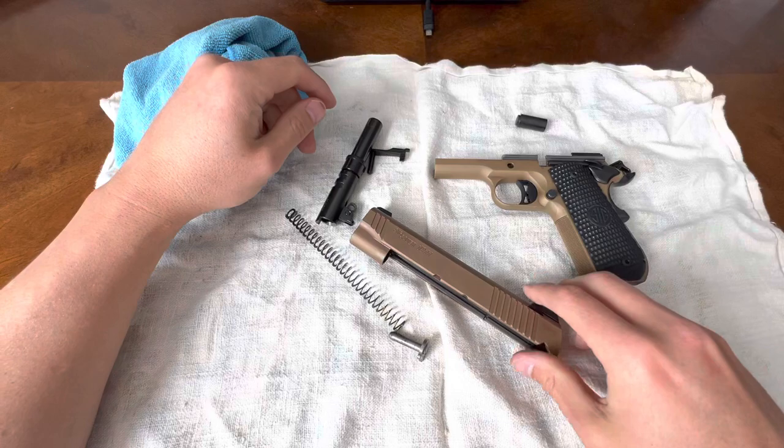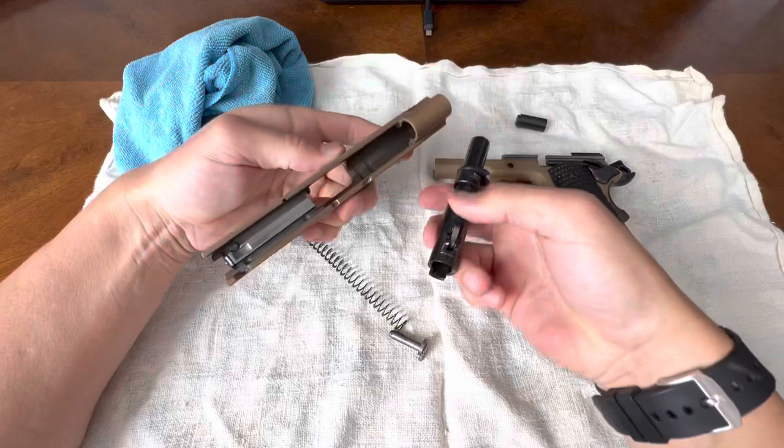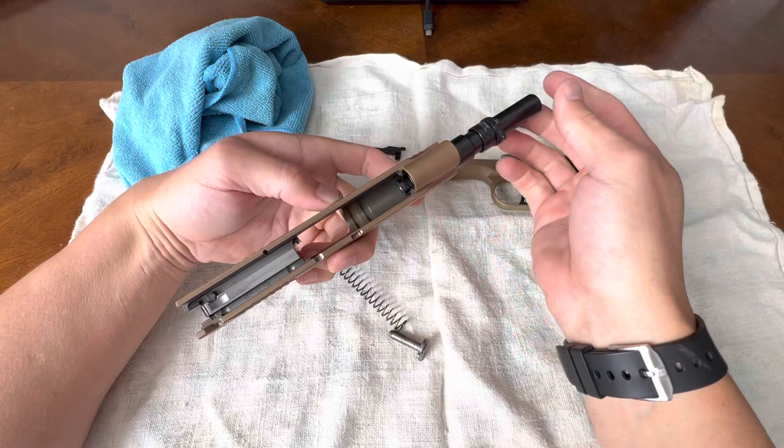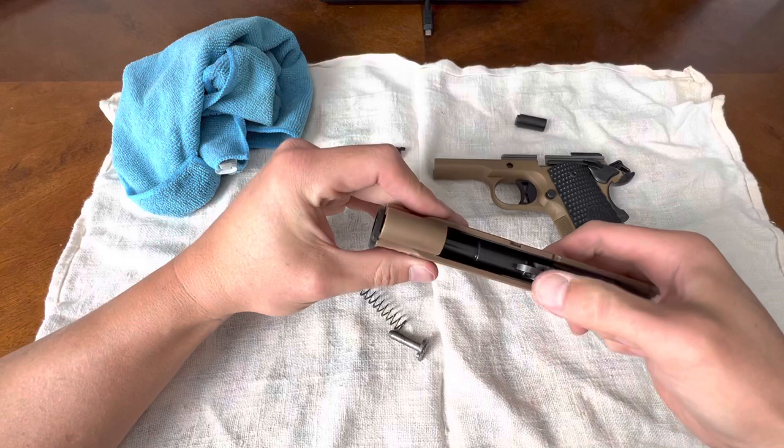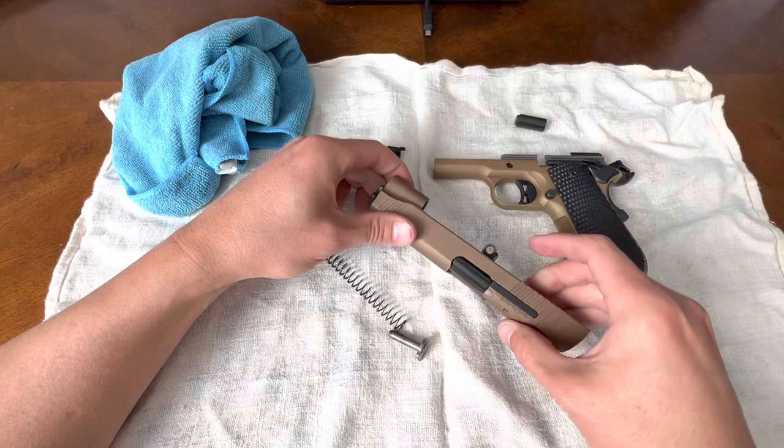So to put it back together, we're going to go in reverse. Make sure this is down this position. Put it back in here. There's a notch right here that you have to line up. Line it up. Spin it back. Barrel's in place. I like to lift this part up. Keep it right there.